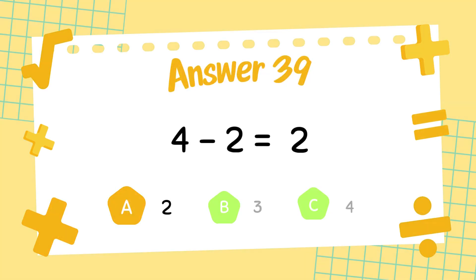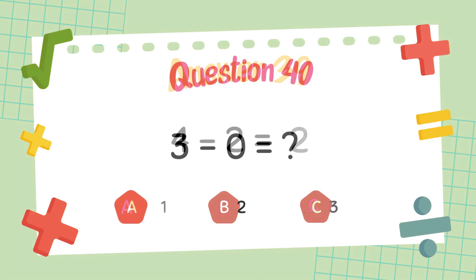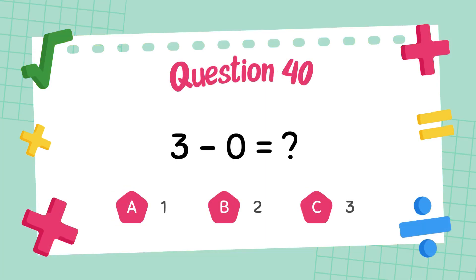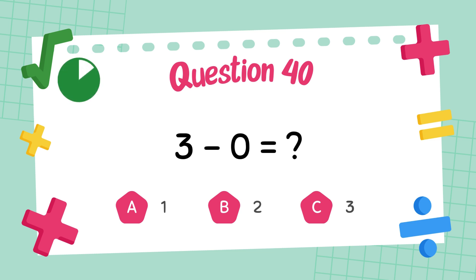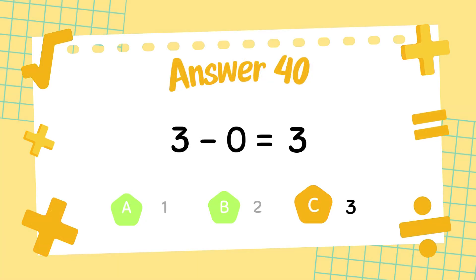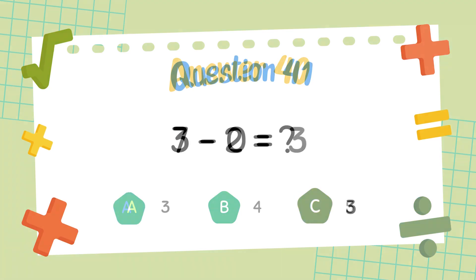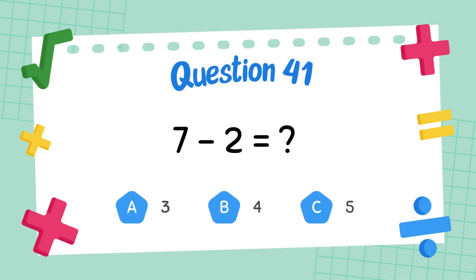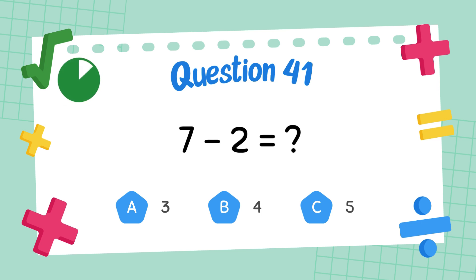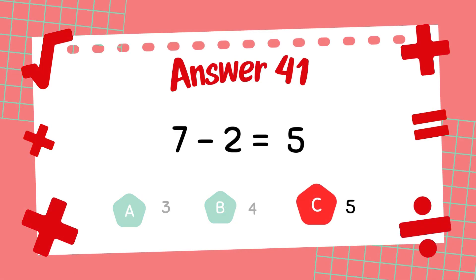The answer is 2. What is 3 minus 0? The answer is 3. What is 7 minus 2? The answer is 5.